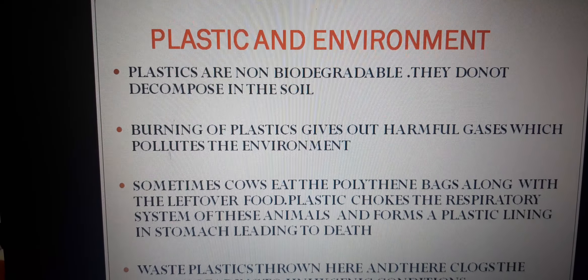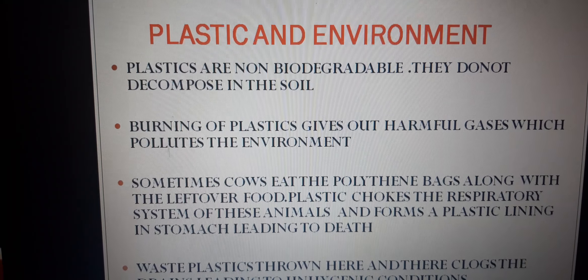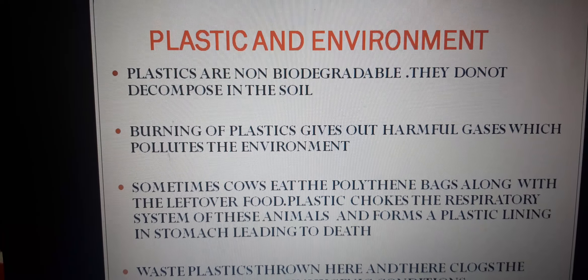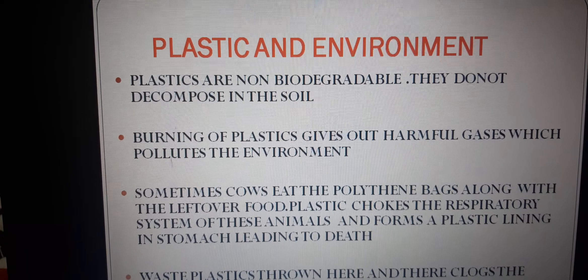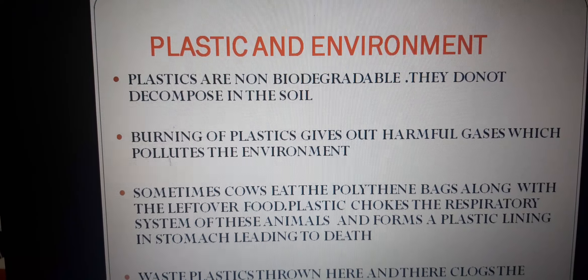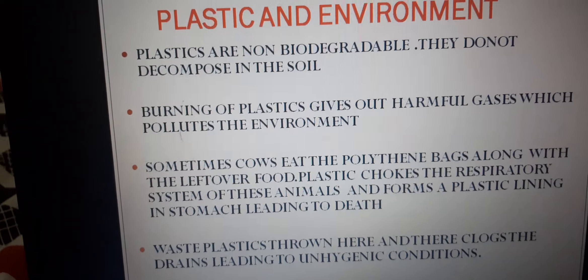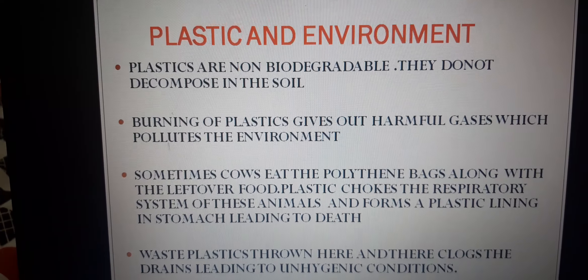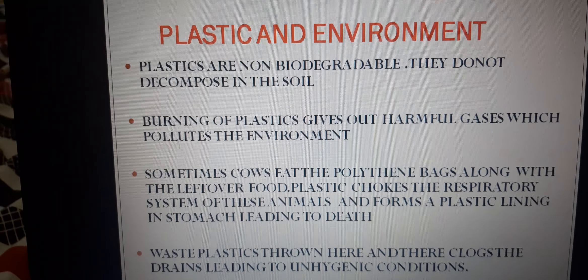Non-biodegradable substances are those which are not decomposed by natural processes and do not mix with the soil. These are called non-biodegradable materials. Examples: plastic, glass, aluminium cans, etc. These non-biodegradable materials are not environmentally friendly. Plastic falls under non-biodegradable things and is not good for our environment.